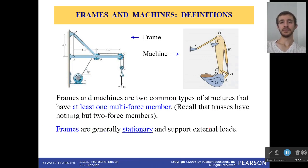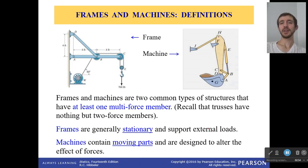So like I said, frames and machines, they have at least one multi-force member. That's where we have not just one force at the end and one force at the other end. We also have some force coming in the middle. Frames are generally stationary and they support stuff.